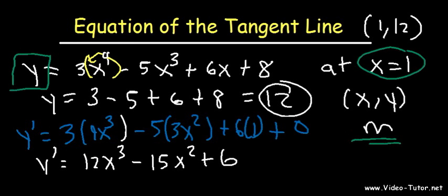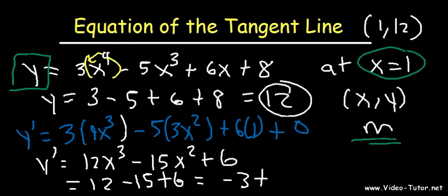Now if we plug in 1, we're going to get the slope of the tangent line. So let's plug in 1. This is going to be 12 minus 15 plus 6. 12 minus 15 is negative 3. If we add that to 6, that's plus 3. So that's the slope.